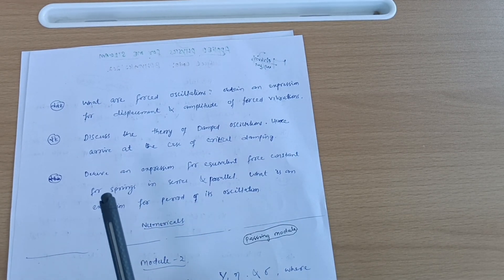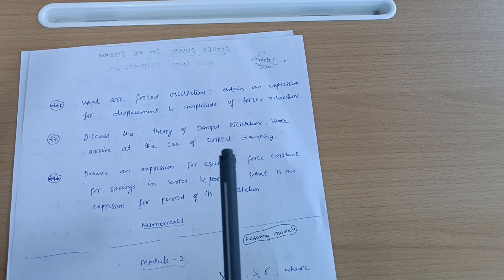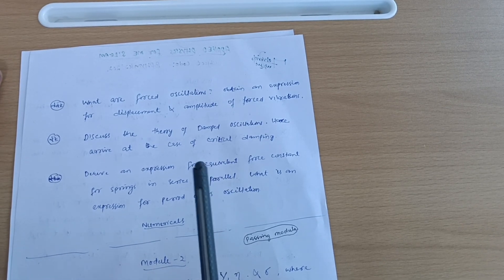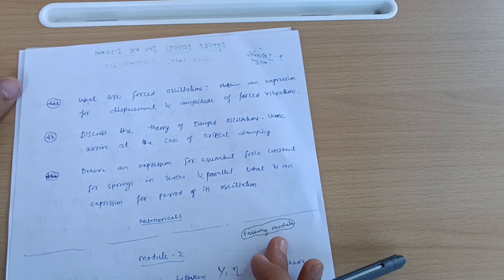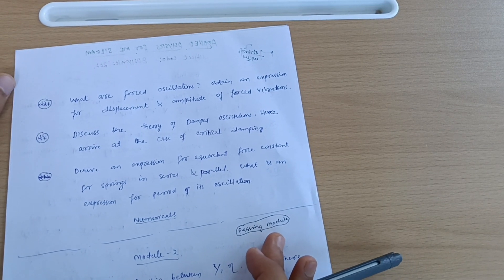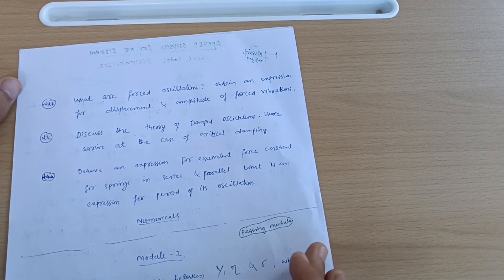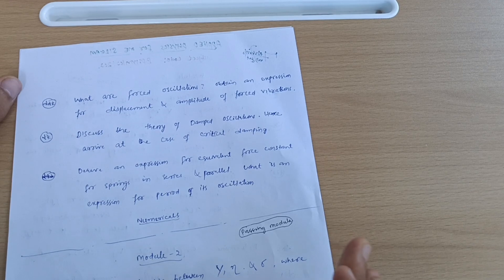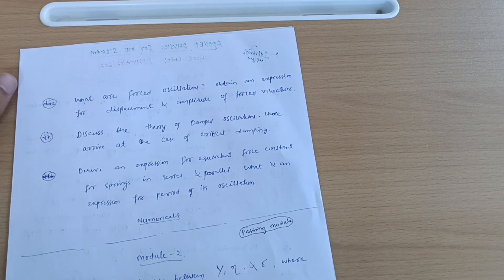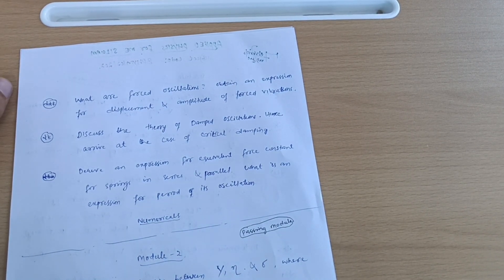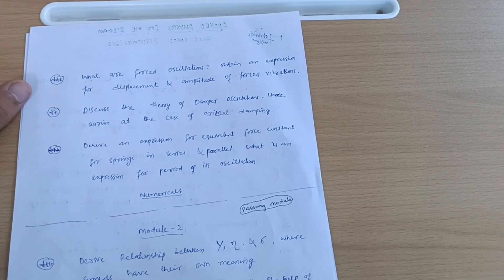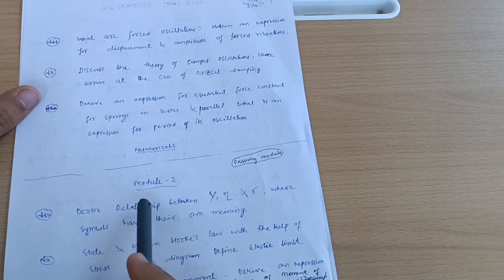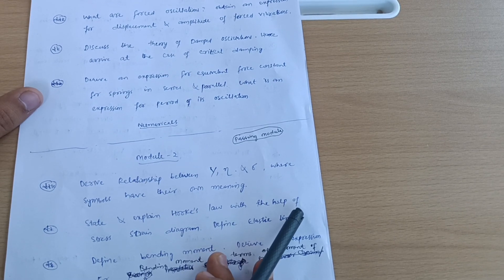Some numericals are there - if you are convenient, go through it. I'm again telling you, physics is the subject where in each and every module there is intermixing of theory and numerical part. You cannot skip actually the numerical part, but it is possible to pass the physics subject only by theory portion if you are covering all portions whatever I have mentioned so far and whatever I will tell you later on in this particular video.